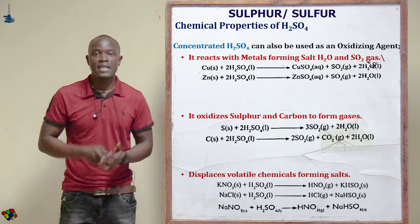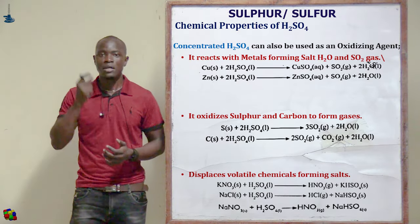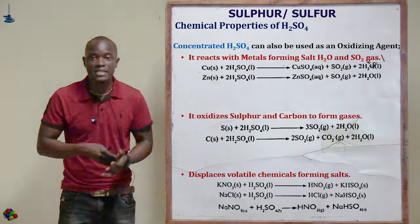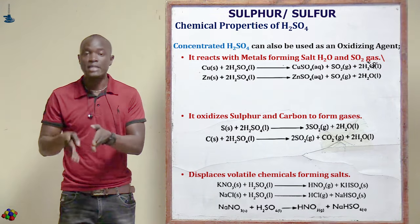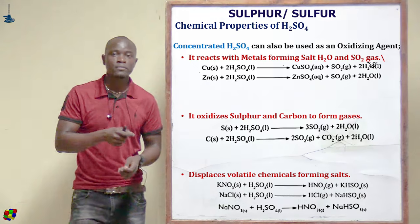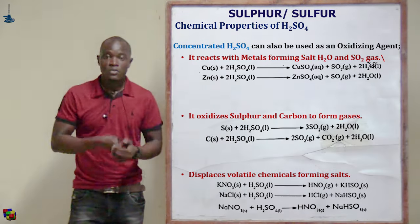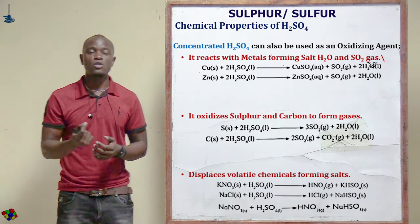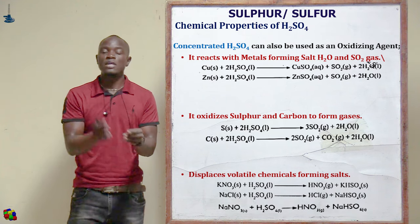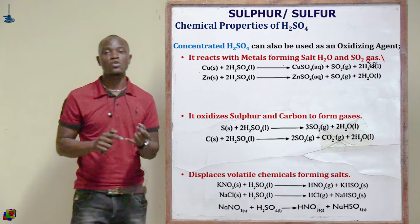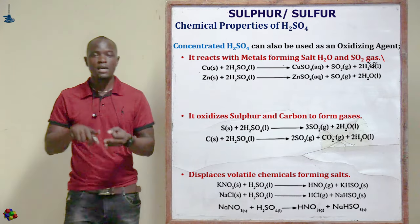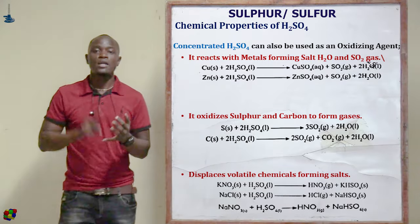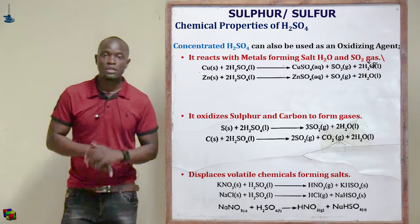Concentrated sulfuric acid also oxidizes solid non-metals such as sulfur and carbon to their gaseous oxides. It oxidizes sulfur to sulfur dioxide (SO₂), and oxidizes carbon to carbon dioxide (CO₂). When it reacts with carbon specifically, the products are carbon dioxide (CO₂), sulfur dioxide (SO₂), and water molecules, as shown in the equation.